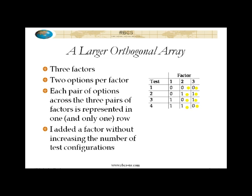Notice that this has saved a lot, because I added one additional factor but the number of test configurations did not increase. What did I give up for that? I gave up complete coverage of combinations — I had that in the previous array, but not this one. My hypothesis is that doesn't matter that much. My increase in risk is acceptable given the increase in cost I'd have to pay to try to cover all the triples — in this case, twice as much.